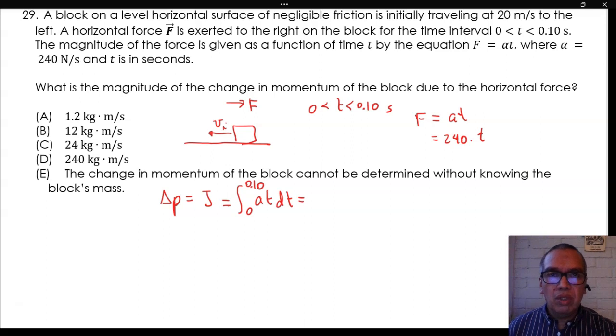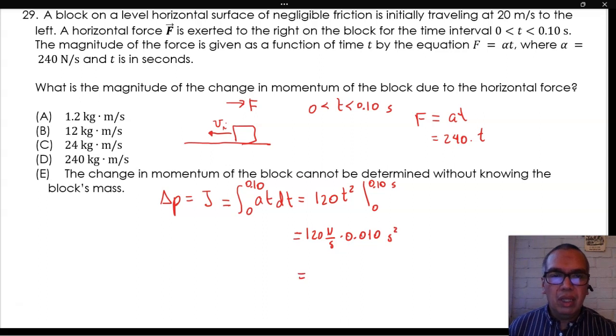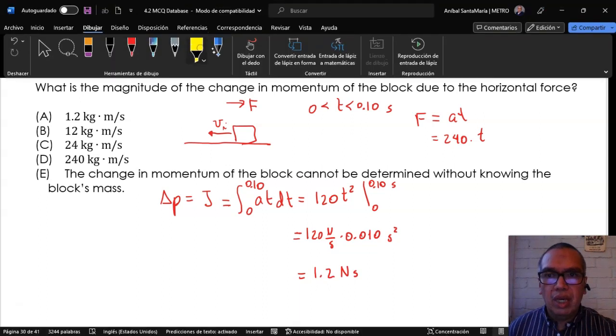This is equal to 120 T squared, evaluated from 0 to 0.10 seconds, or 120 newtons per second times 0.010 squared seconds. The final change in momentum is then 1.2 kilogram meters per second. This is option A.